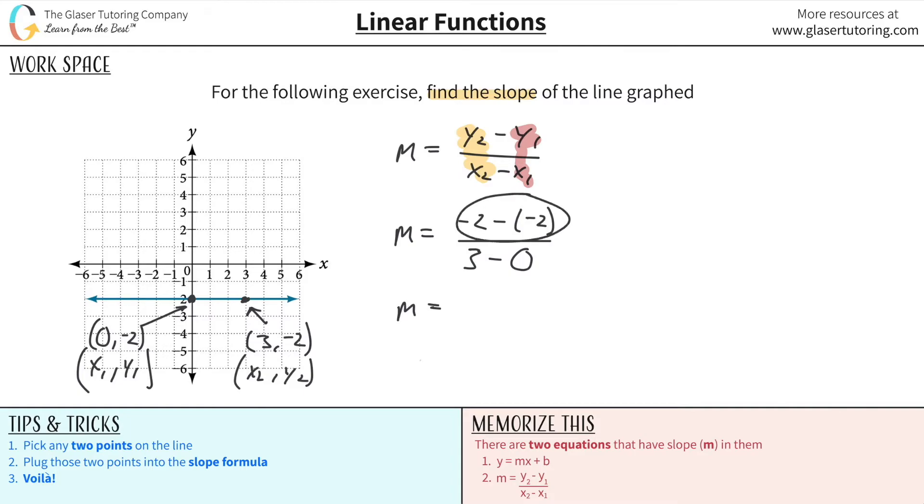All right, let's do some math. So this is the numerator now. It becomes negative two minus a minus two which the double negative turns into a positive. So it's really negative two plus two. And what does that work out to be? Big ol' zero. Zero divided by then, three minus zero is what? Three.